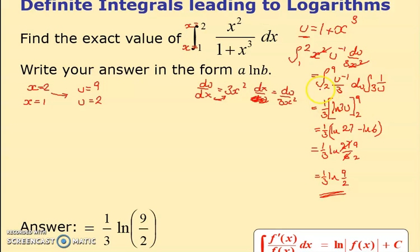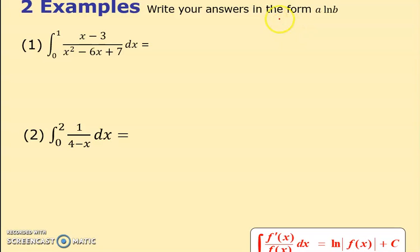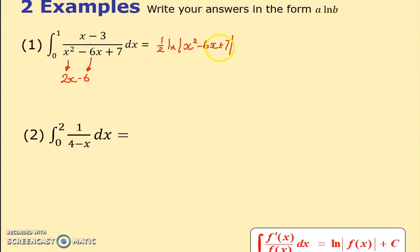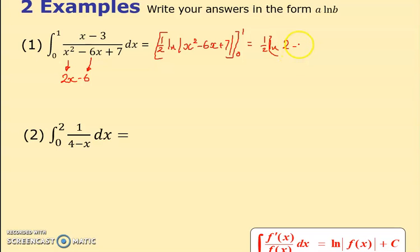Here are two more examples. If I differentiate x squared minus 6x plus 7, I get 2x minus 6, and that is double the numerator, so this gives me a half of the log of the denominator. It's a gentle example but now it's a definite integral between 0 and 1. Putting those in: a half of log of 8 minus log 7.